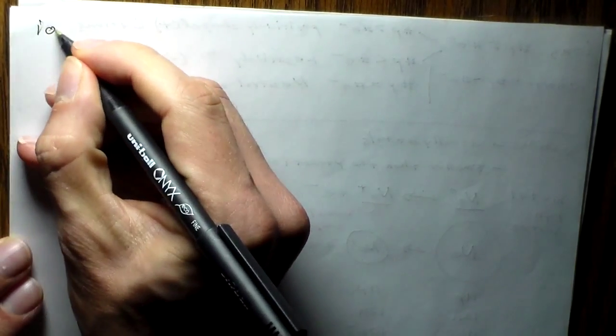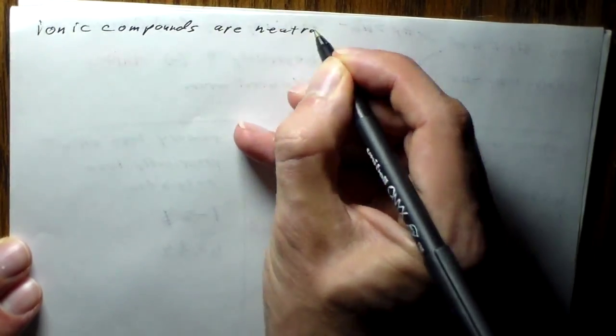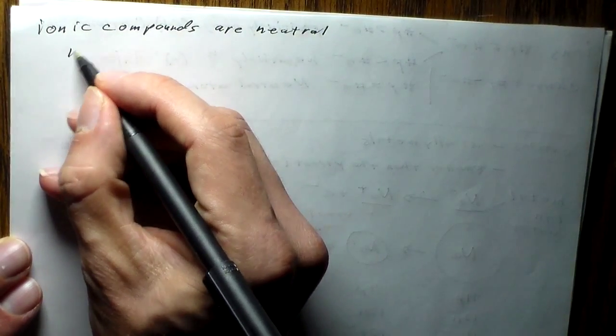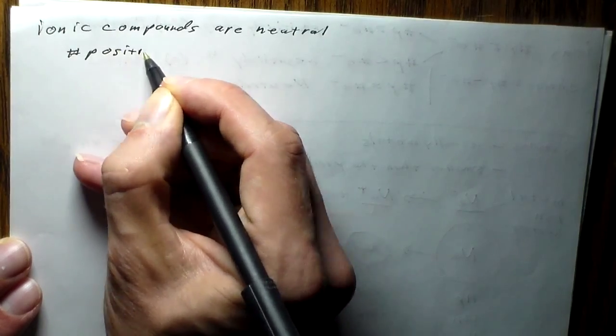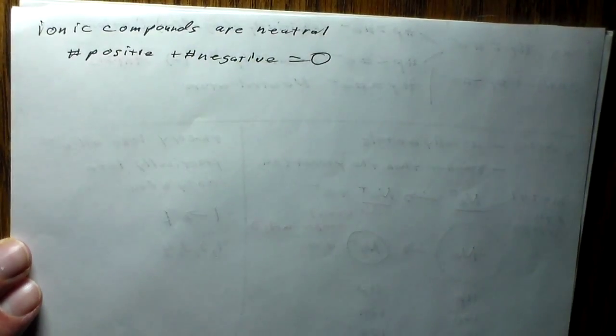One important point: when dealing with ionic compounds, they are going to be neutral, meaning the number of positive charges plus the number of negative charges is going to equal zero. All the positive charges plus all the negative charges, when we combine the two things together, gives us neutral molecules.